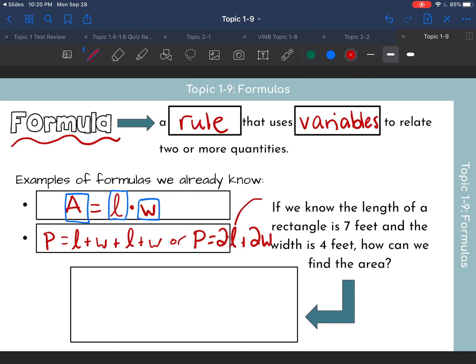And again, if you have the length and the width and you plug it into each equation, you get the perimeter and also the area. So those are two formulas we already have talked about without even really knowing what a formula is. So the question is, if we know the length of a rectangle is seven feet and the width is four feet, how can we find the area?